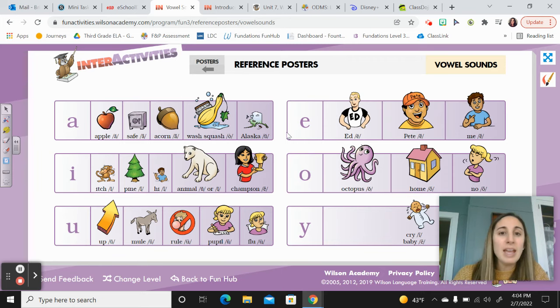Repeat after me. A Alaska uh, E Pete E, I animal up or I, I champion E, O no O, U pupil U, U flu U, Y cry I, and Y baby E. Nice job.